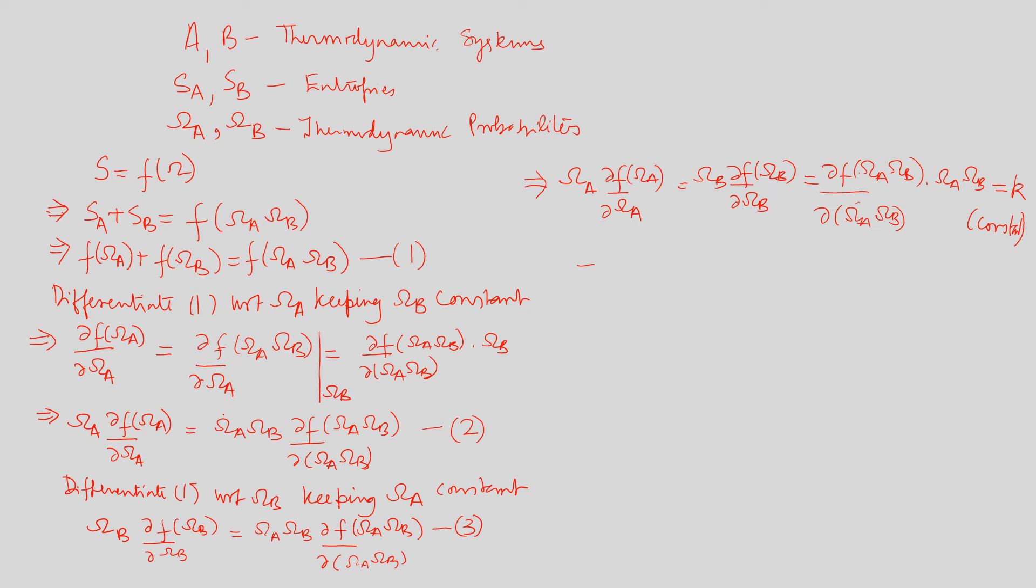Now we know that omega A and omega B is nothing but the composite probability. So replace omega A omega B product by the symbol omega, which represents the composite probability of the complete system. So this gives us omega times del f by del omega is equal to a constant, which further gives us del f is equal to K times del omega by omega, and integrating we get f of omega is equal to K ln omega plus S0.